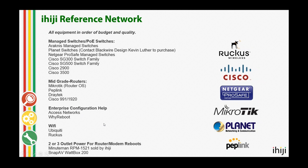For two- or three-outlet IP power products that allow sequential reboots on your modem and router, the Minuteman RPM 1521 and the SnapAV Wattbox 200 are at about the same price point — little two-outlet IP power products. You can put them behind TVs, Apple TVs, cable modems, and cable boxes as a really inexpensive way to remotely reboot. The Minuteman was about $150.